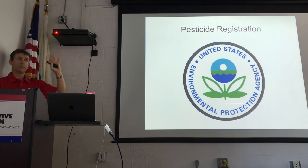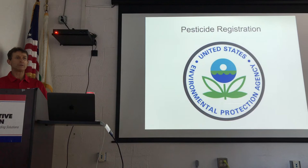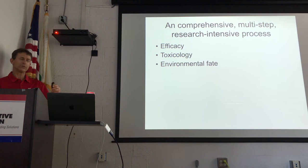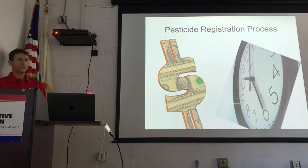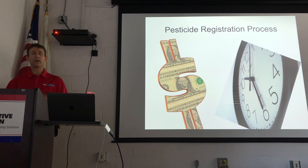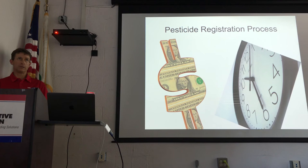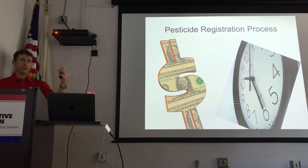There's a lot of good science that happens at the EPA — it's an agency that's been around for decades doing this work. In order for a pesticide to make it to market, it goes through a comprehensive, very research-intensive process. It starts with efficacy testing, then toxicology, environmental fate, ecological effects, and residues on food. It's very expensive and very time-consuming, and it's actually pretty unusual at this point for a new pesticide product to come on the market because of how costly the process is.